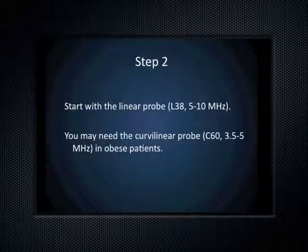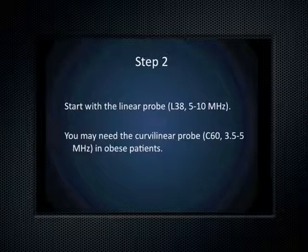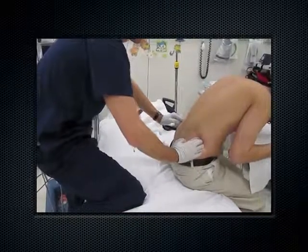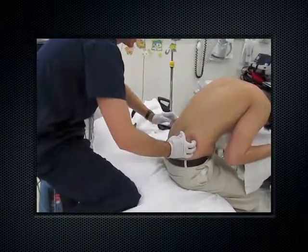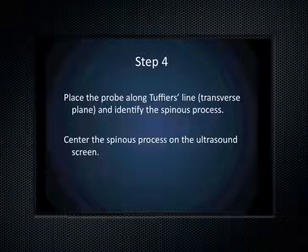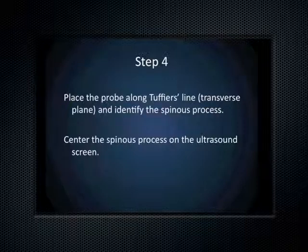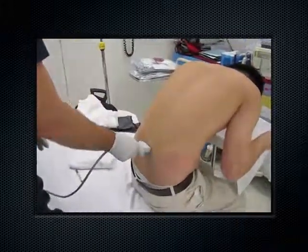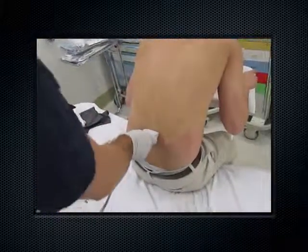Start with the linear probe or the L38. In a more obese patient you may need to move to the curvilinear probe. Identify Tuffier's line — the horizontal line between the superior iliac crests — which helps you identify where to first place the probe. Place the ultrasound probe along Tuffier's line in the transverse plane, keeping the probe marker to your left and to the patient's left. Then find the spinous process and center it in the middle of the screen.